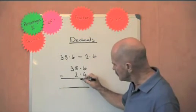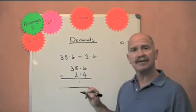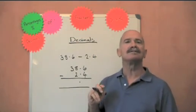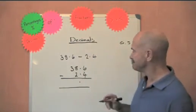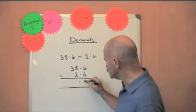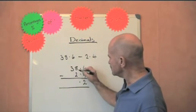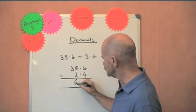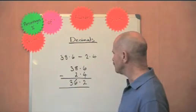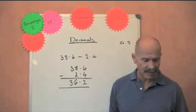The decimal point, all points go underneath each other in addition and subtraction. Different for multiplication. 6 take away 4 is 2. 8 take away 2 is 6. 3 take away nothing is 3. That's it. How easy.